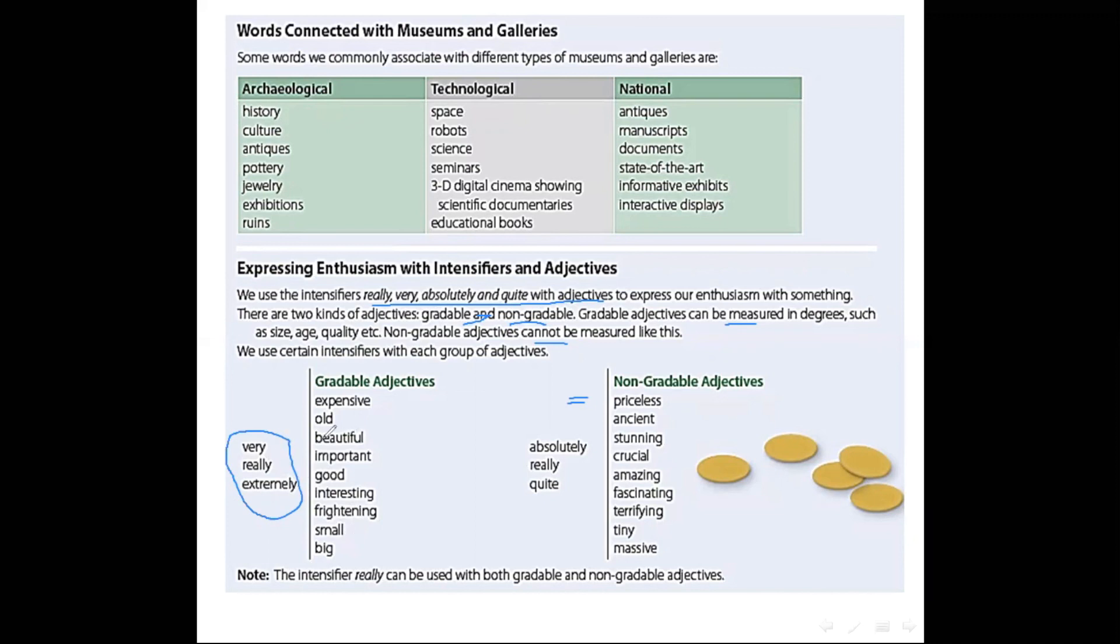But we can't use these intensifiers with non-gradable adjectives. Why? Because they are strong adjectives like priceless, ancient, stunning, crucial, amazing, fascinating, terrifying, tiny, massive. They have the same meaning but they are stronger adjectives. But take care of the intensifier really. Really can be used with both gradable and non-gradable adjectives. Data is very good.